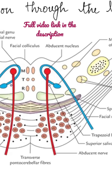A transverse section through the lower caudal part of the pons passes through the facial colliculus. The gray matter at this level comprises the abducens nerve nucleus, the facial nerve nucleus, the vestibulocochlear nucleus, and the spinal nucleus of the trigeminal nerve.